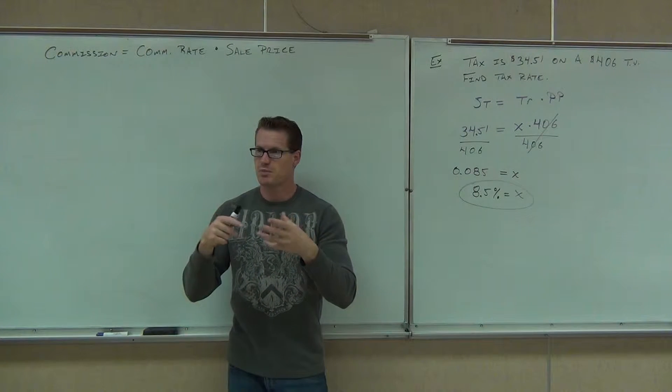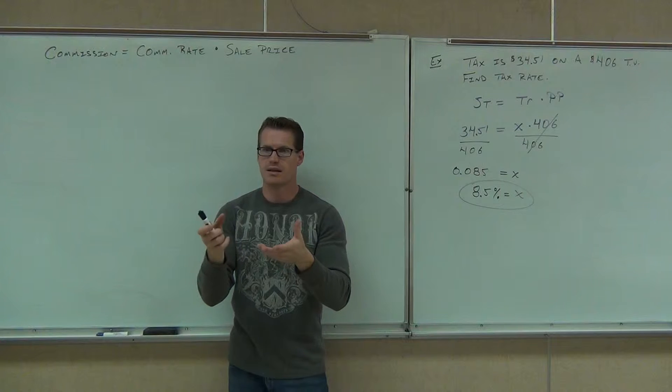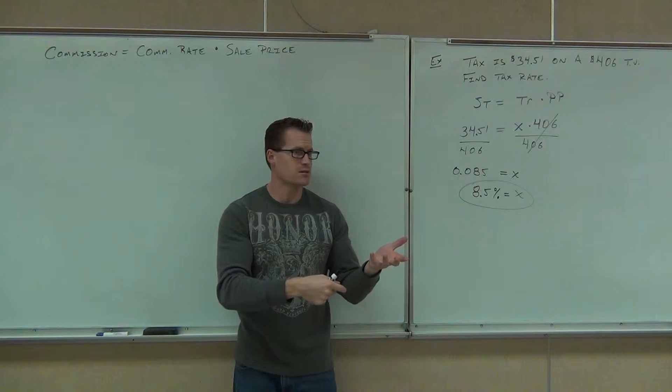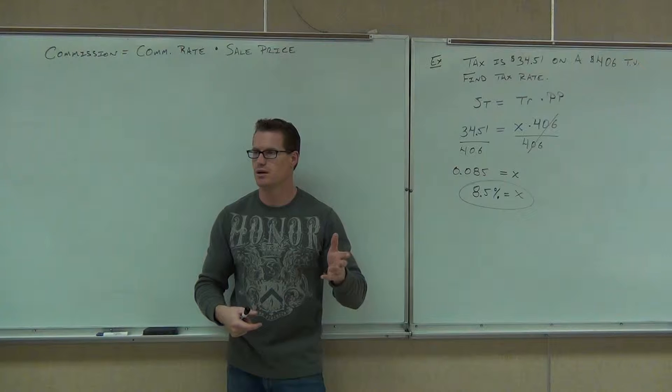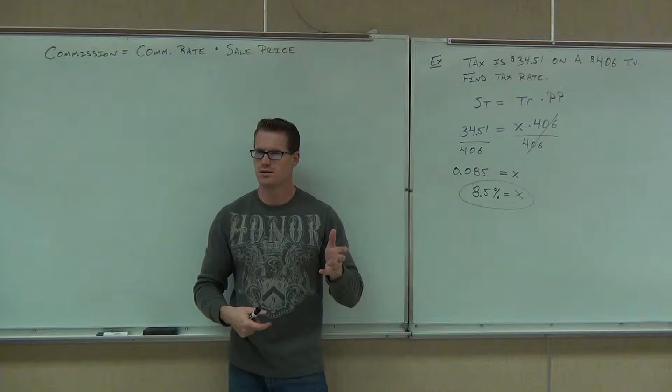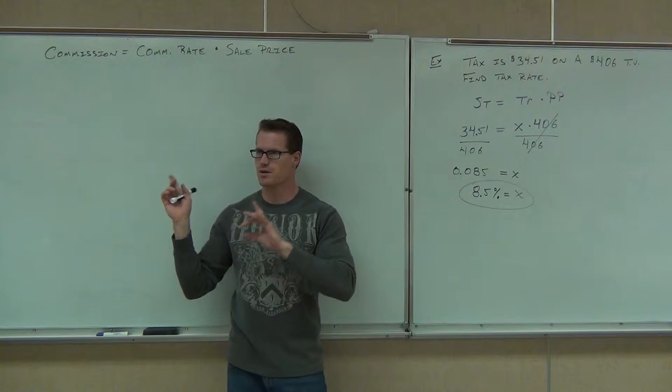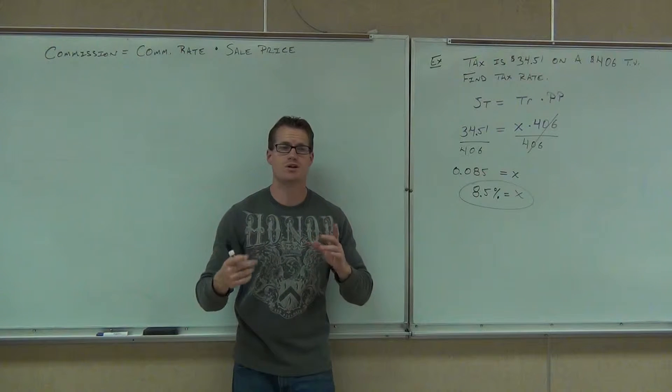So basically, these people who are getting commission are getting like a tax on the item. It's like they're getting a tax, very similar to a government tax rate. Does that make sense to you? Do you guys see the similarity between this formula and the last one? It's going to be calculated the same way as well.